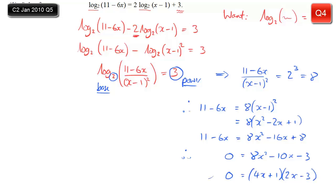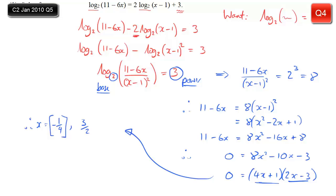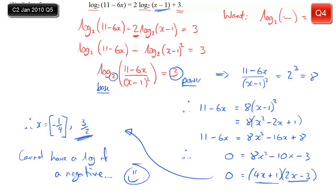This does factorize: (4x plus 1)(2x minus 3). Reading off our solutions: from the first bracket, x equals minus a quarter; from the second bracket, x equals positive 3 over 2. We find we have to disregard minus a quarter and take 3 over 2 as our solution. Looking at the original equation, if x were minus a quarter then x minus 1 would be a negative number, and you cannot have a logarithm of a negative number. The mark scheme is lenient — you can include minus a quarter as long as you include 3 over 2.